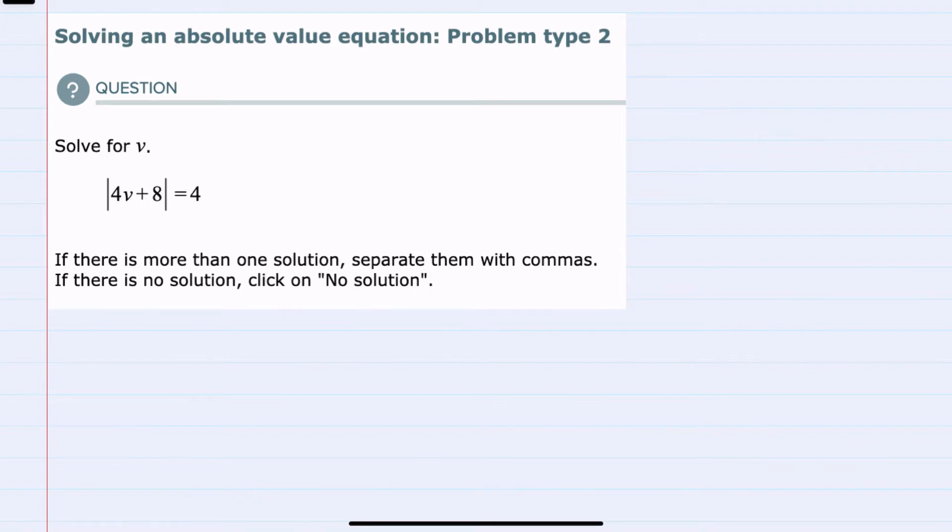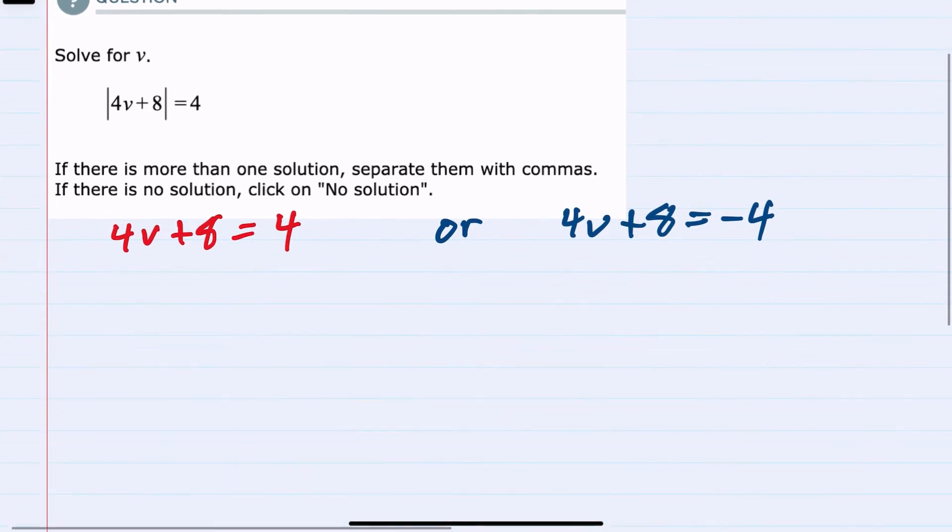We could drop the absolute value and say 4v plus 8 equals 4, but the other possibility is that the value inside, 4v plus 8, equals a negative 4. So to remove the absolute value, we're going to have two possibilities. Either it equals the positive value that was expressed outside, or it could be the opposite of that, the negative value, because taking the absolute value of a negative 4 would make it a positive 4.